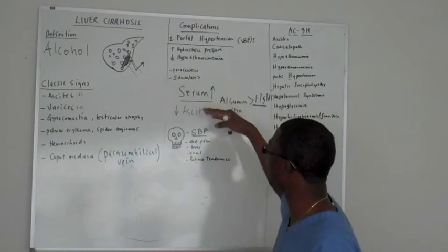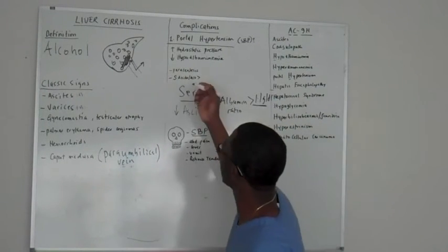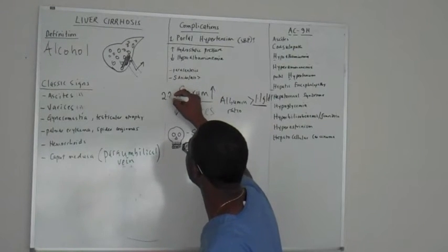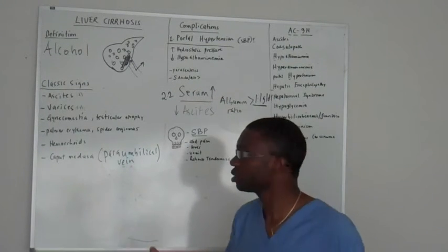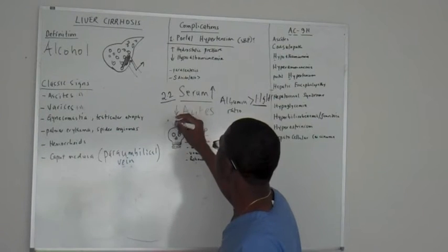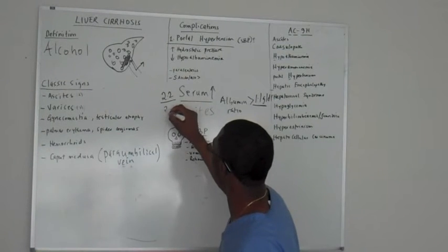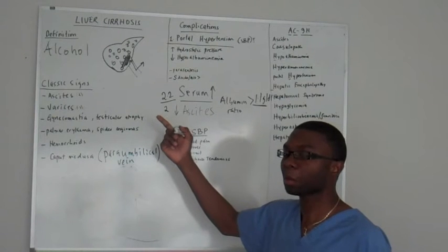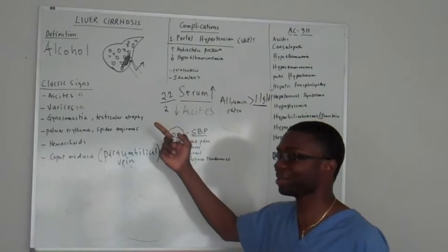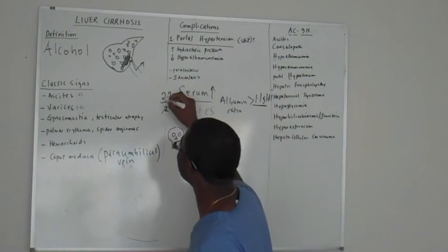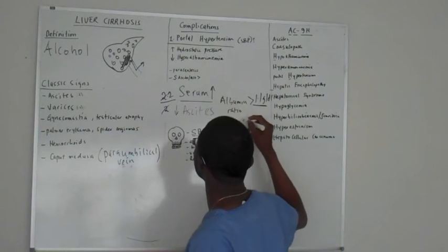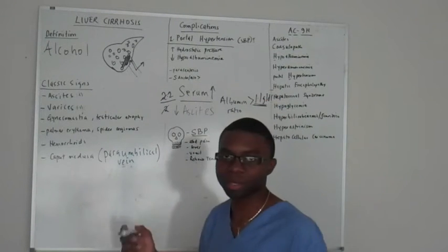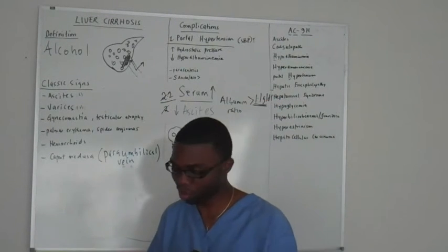If you divide that number — the ratio — let's say there's 2.2 grams in your serum and about 2 in your ascites. Believe it or not, 2 is less than 2.2, so 2.2 over 2 would be 1.1. Kind of made up that number, but it works out perfectly.